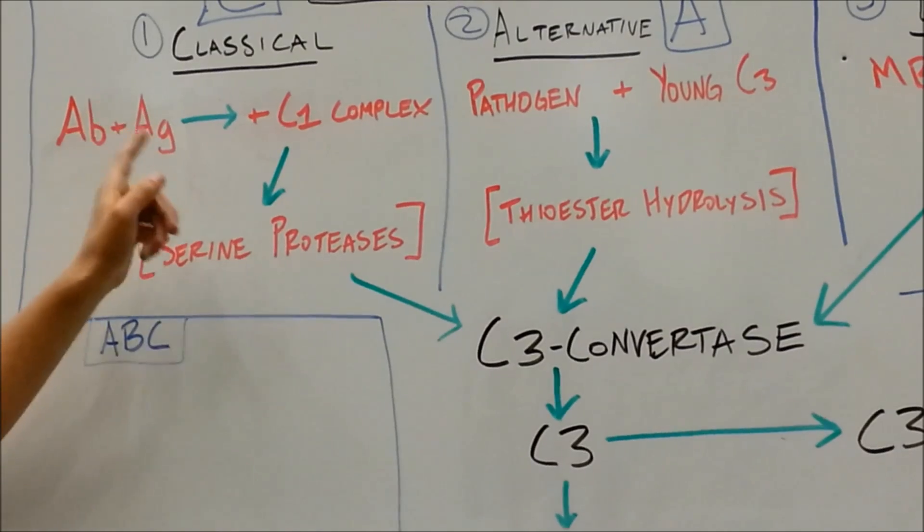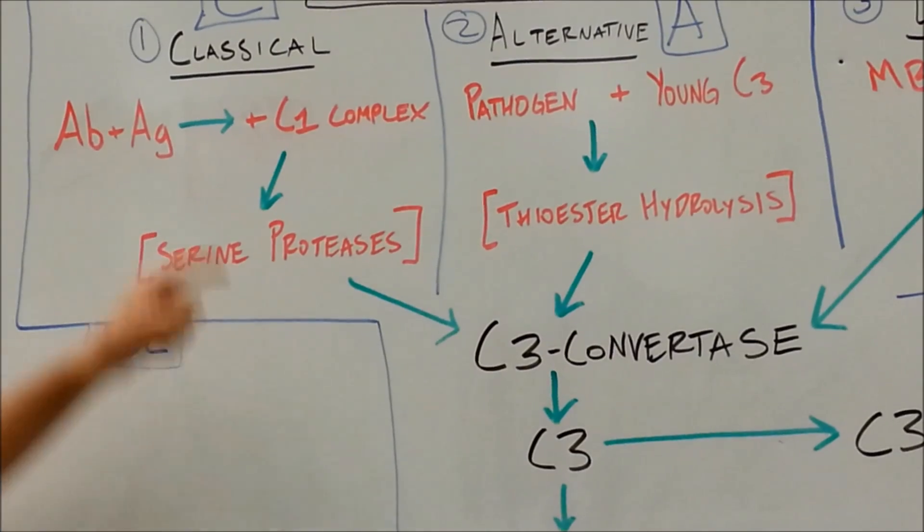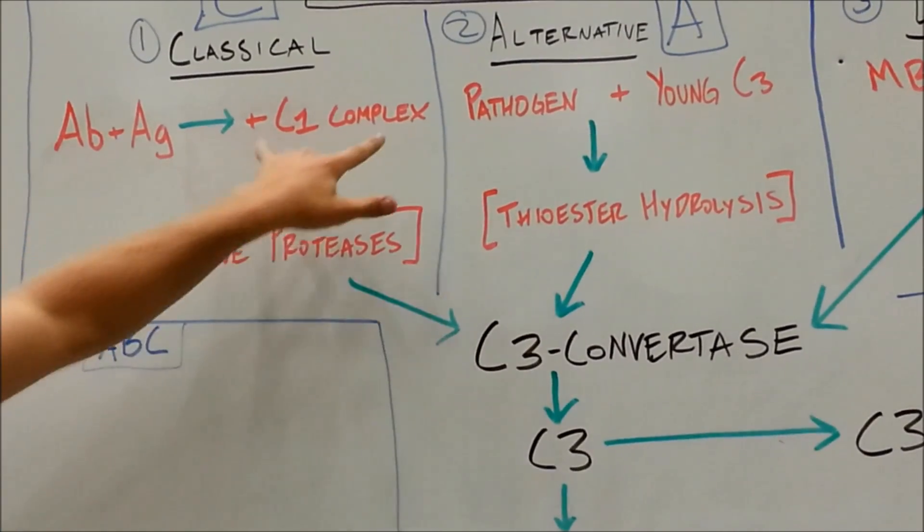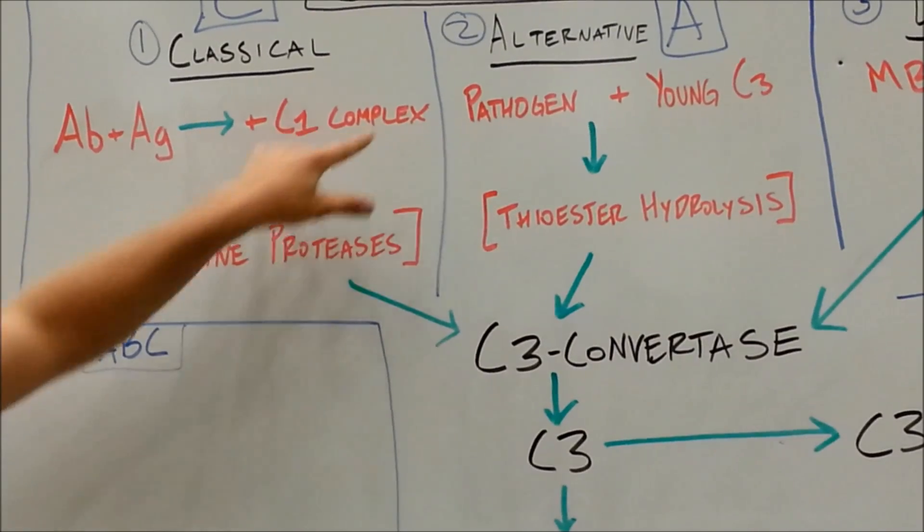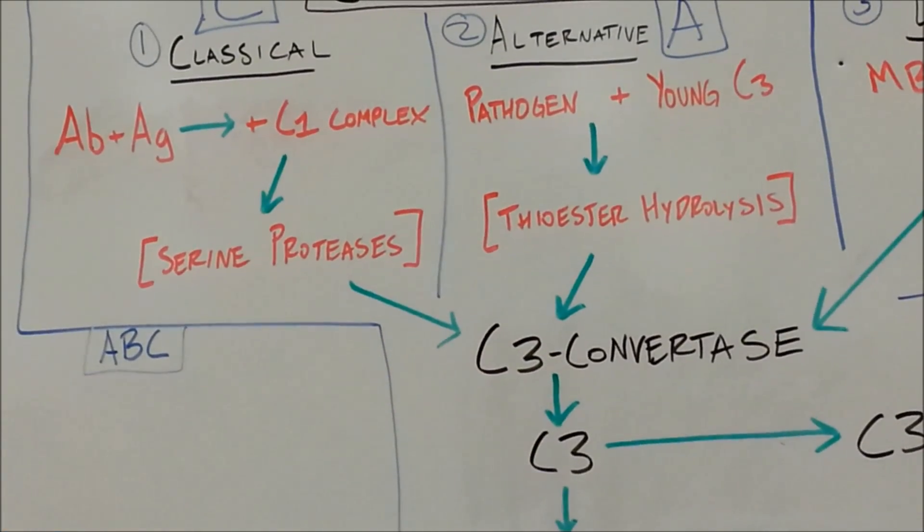Now, the big thing to note, what they're going to ask about on tests, is which of these starter pathways uses antibodies in it? And that's going to be classical. So classical uses A-B-C. Antibody antigen adds to the C1 complex through some serine proteases, gets you to C3 convertase, gets you to this common pathway, the second half.